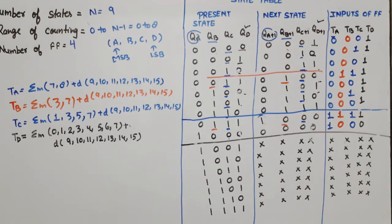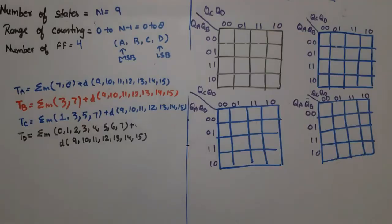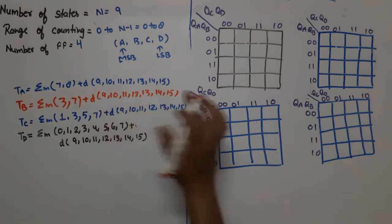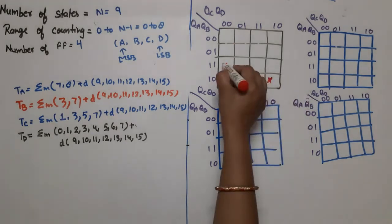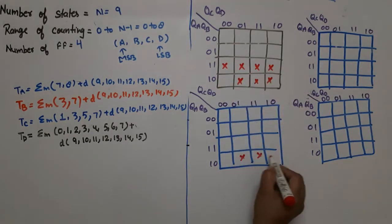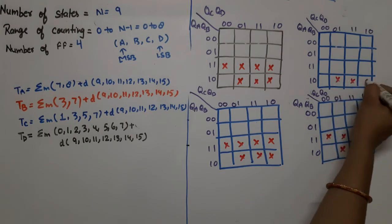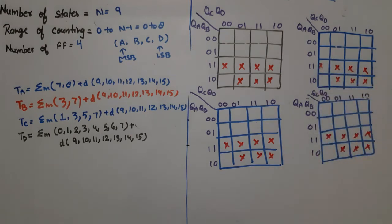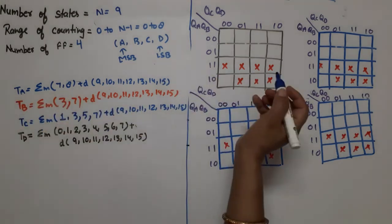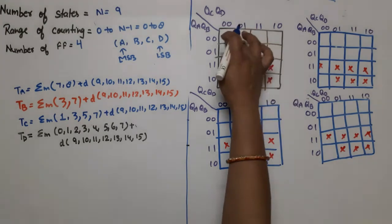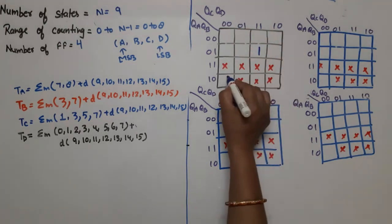Now we have 4 functions and need to simplify using K-maps. I have made 4 blank K-maps. Since don't-care is the same for all, first I mark don't-cares at positions 9, 10, 11, 12, 13, 14, 15 in all four K-maps. Then for TA, I plot the minterms 7 and 8.